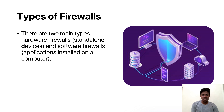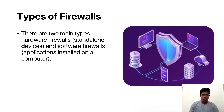There are two different types of firewalls: hardware firewalls, which are standalone devices, and software firewalls, which are applications installed on a computer. Hardware firewalls are physical devices placed between your internal network and the internet, providing network-wide protection. On the other hand, software firewalls are applications installed on individual computers, offering local protection. Both types share the common goal of securing your network, but they operate at different levels.